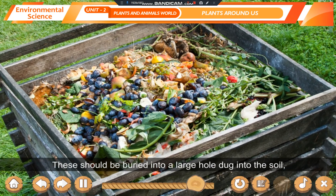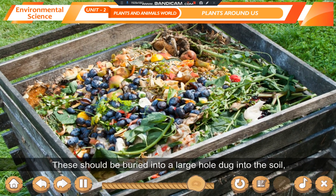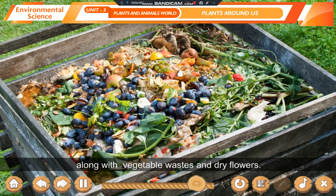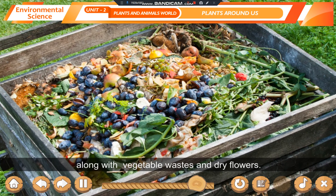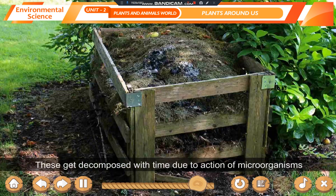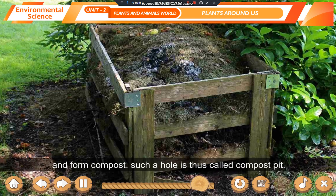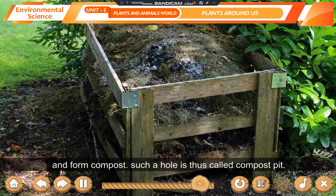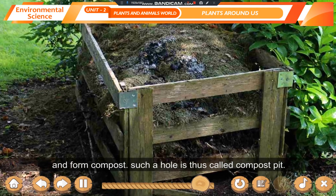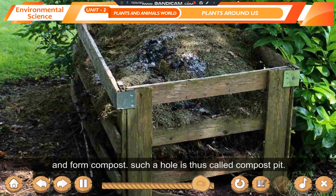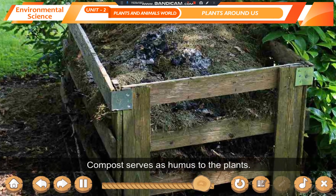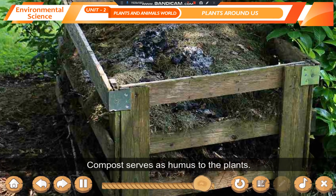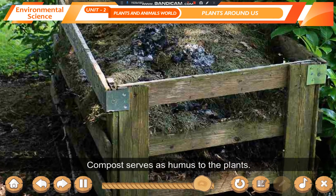Dry leaves should be buried into a large hole dug into the soil along with vegetable scraps and dry flowers. These get decomposed with time due to action of microorganisms and form compost. Such a hole is called a compost pit. Compost serves as humus to the plants.